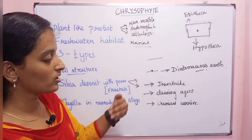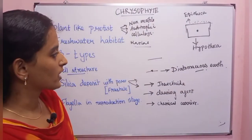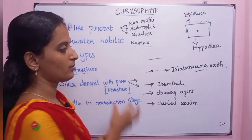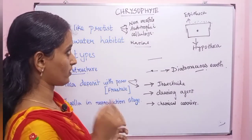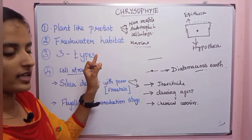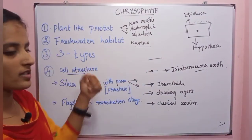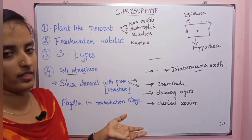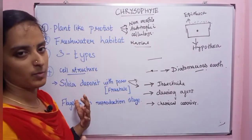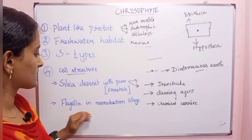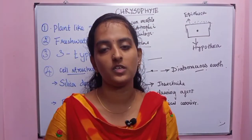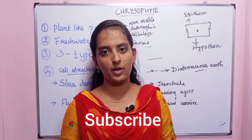Diatoms are the chief producers in fresh water. To summarize chrysophytes: there are three types — bacillariophyta, chlorophyceae, and xanthophyceae. Cell wall is made up of cellulose, but in diatoms it is made of silica. Flagella appear only in the reproduction stage. Like, share, and subscribe. Thank you.